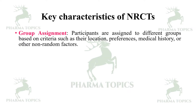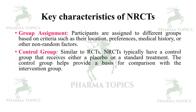Let us see the key characteristics of non-randomized control trials. First is group assignment: participants are assigned to different groups based on criteria such as their location, preferences, medical history, or any other random factors. Similar to randomized control trials, non-randomized control trials typically have a control group that receives either a placebo or standard treatment.